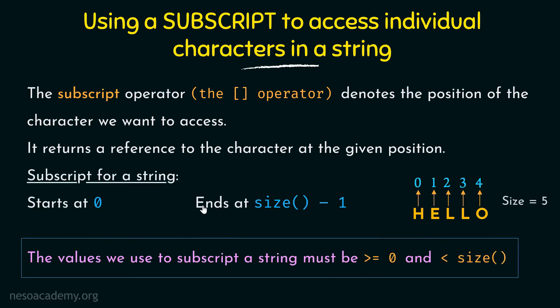The subscript for a string starts at zero and ends at size minus one. For every string, the indexing starts at zero. For example, the string 'hello' has five characters, indexed zero, one, two, three, four. The ending index is size minus one — here size is five, so size minus one is four. We must ensure the subscript value is greater than or equal to zero and less than the size of the string. If you try to access something beyond this range, it will throw an error.